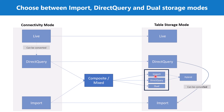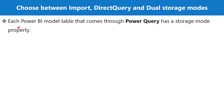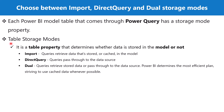For each Power BI model table, any table that comes through the Power Query editor has a storage mode property assigned inside the Power BI Desktop environment. A table storage mode is a table property that determines whether the data is stored in the model or not. Keep this definition in mind — it tells us whether the data in the table is stored as part of the data model or not.